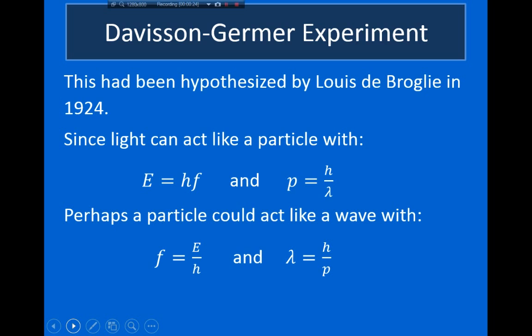The explanation behind what was going on in the Davisson-Germer experiment had already been hypothesized in 1924 by physicist Louis de Broglie. What de Broglie was trying to do was explain what was going on inside atoms. He hypothesized that since light can sometimes act like a particle with energy given by E = hf and momentum given by p = h/λ, maybe particles can sometimes act like waves.